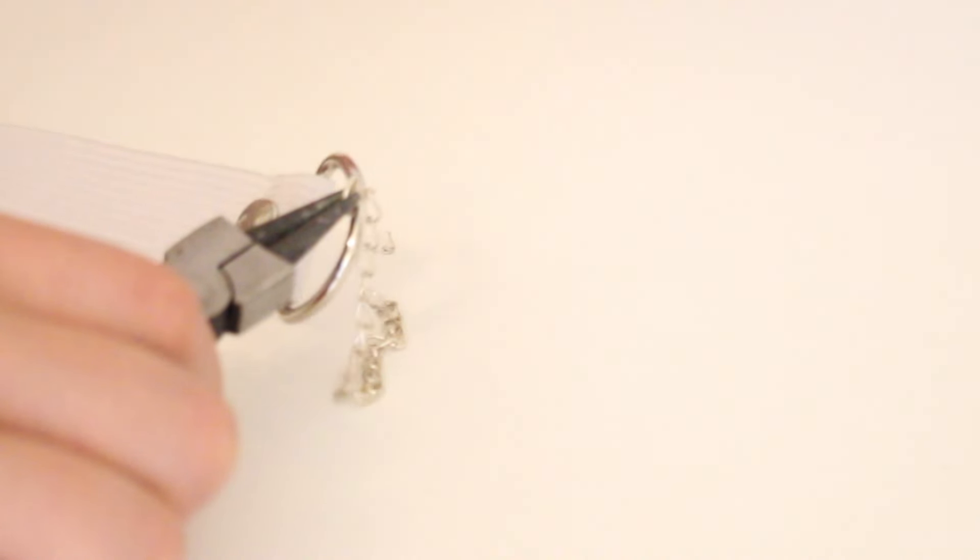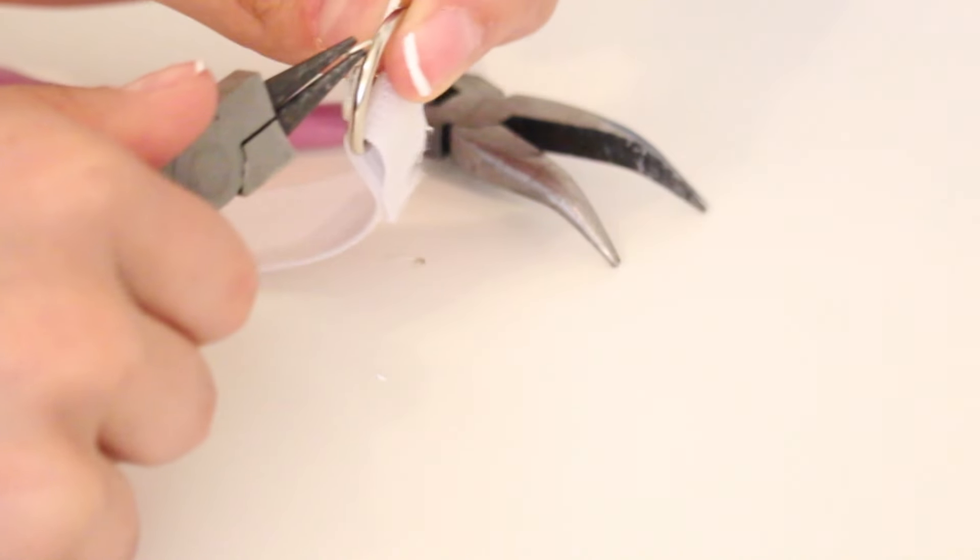Add the chain onto the jump ring and close it up, and just make sure it's secure. I'm taking the hook here and attaching it to the other end.